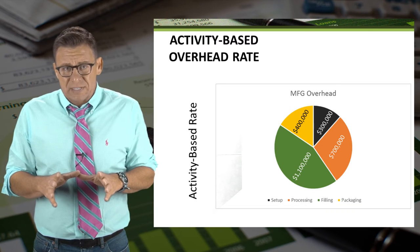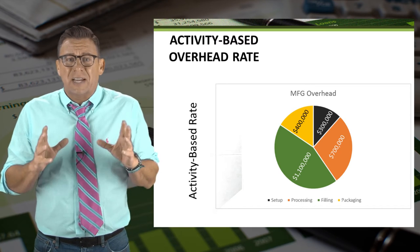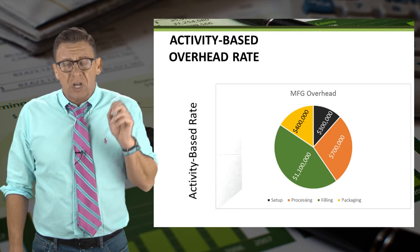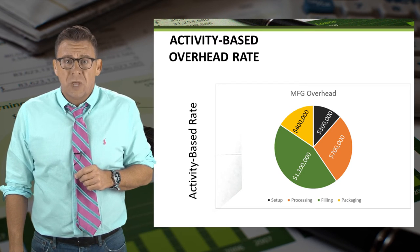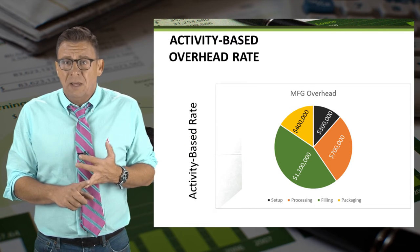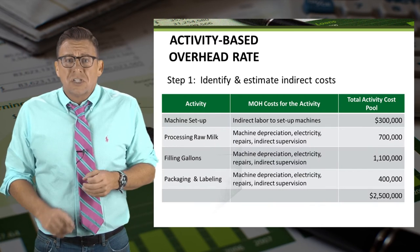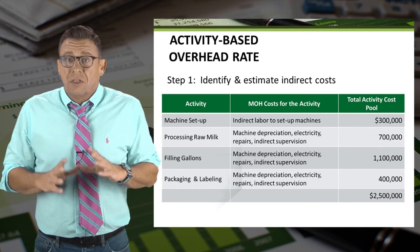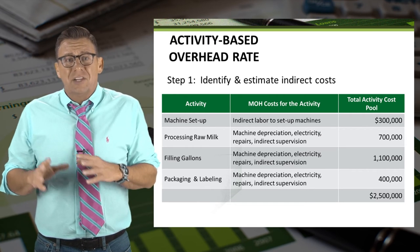With activity-based rates, we divide manufacturing overhead into groupings of activities. Ideally, these are the activities which cause the business to incur overhead costs in the first place. In this example, the activities are machine setup, milk processing, filling, and packaging and labeling. So when determining overhead cost allocation with activity-based rates, the first step is to identify the activities and how much overhead is related to each one.